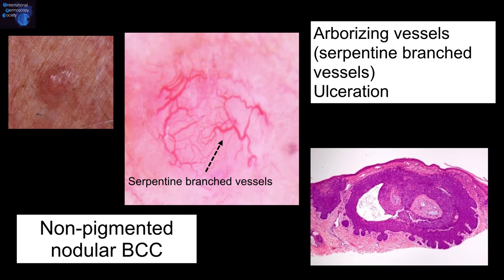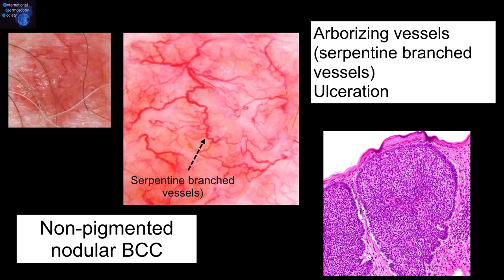Another example of a non-pigmented nodular basal cell carcinoma. For non-pigmented nodular basal cell carcinomas, the key feature is arborizing vessels — in this instance, these serpentine branch vessels. One more example showing a non-pigmented nodular basal cell carcinoma with the serpentine branch vessels.